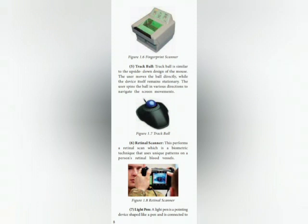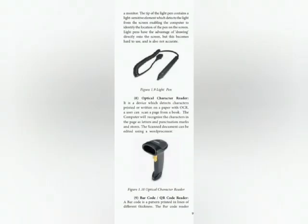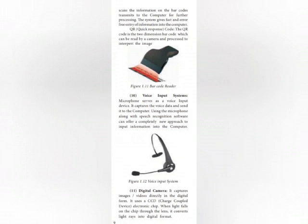Light pen. A light pen is a pointing device shaped like a pen and it is connected to the monitor. The tip of the light pen contains a light-sensitive element which detects the light from the screen, enabling the computer to identify the location of the pen on the screen. Light pens have the advantage of drawing directly onto the screen, but they are hard to use and not very accurate.